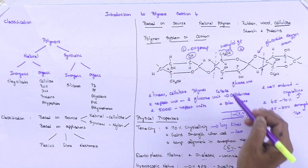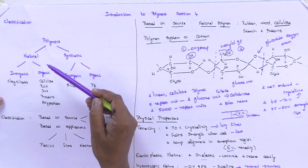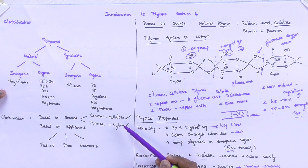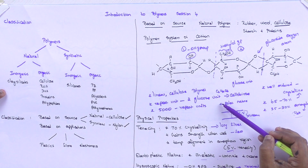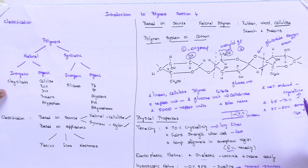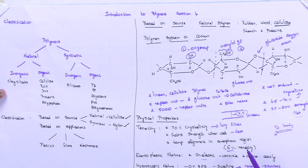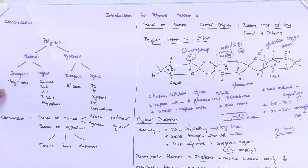In summary, in this session we classified polymers into inorganic and organic, natural and synthetic, based on source and applications. We also examined the cotton polymer system through a diagram. Cotton has a linear cellulose polymer with a cellobiose repeat unit, and there are 5000 repeat units. It has a well-ordered crystalline structure. Due to hydrogen bonding and weak van der Waals forces, the polymer exhibits tenacity and hygroscopic nature, while its elastoplastic nature is very low — cotton creases easily.